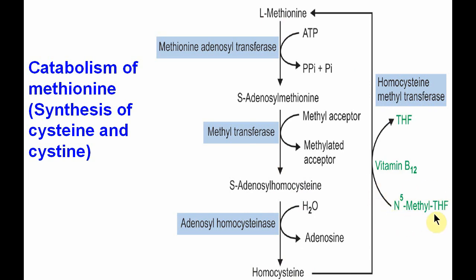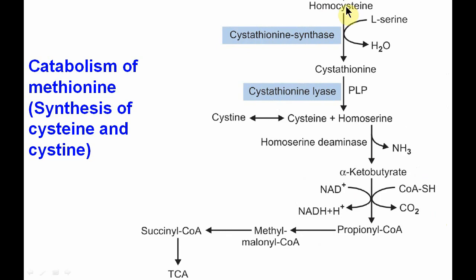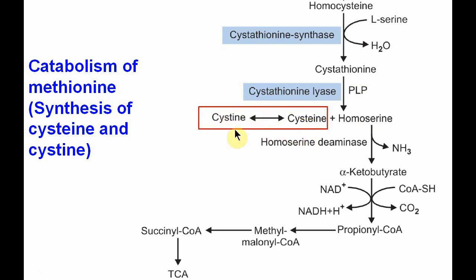An important point here is that vitamin B12 is also required in this reaction — you can remember this by the folate trap. Next, homocysteine with L-serine and the enzyme cystathionine beta-synthase forms cystathionine. Cystathionine, via lyase with cofactor pyridoxine, forms cysteine and homoserine. This cysteine is used to further synthesize cystine.